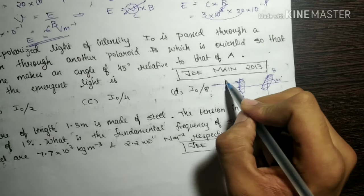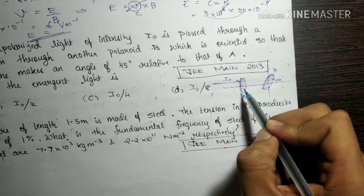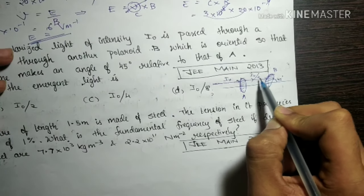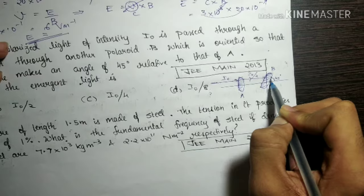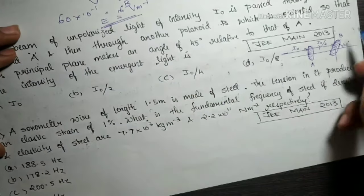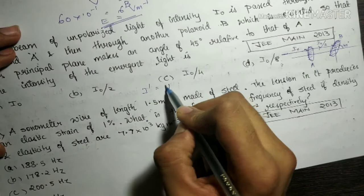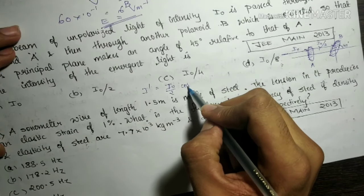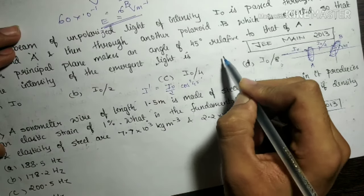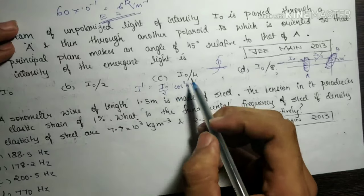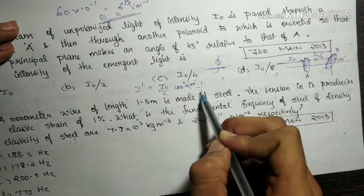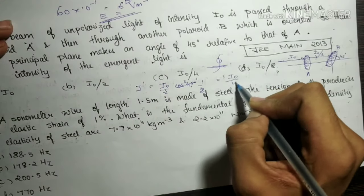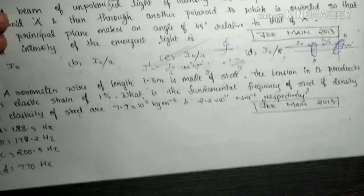A light ray with intensity I₀ is coming in. Always remember that when it passes through the first polaroid it becomes half its original value, so I₀/2 is incident on polaroid B. Applying Malus's law: I' = (I₀/2)×cos²45° = (I₀/2)×(1/2) = I₀/4. So option C is the correct answer — very simple.